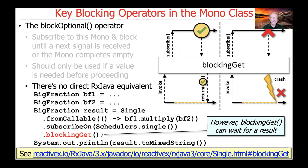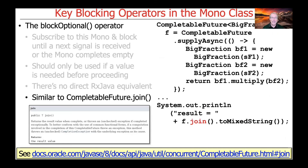You can use blockingGet in much the same way as you could use blockOptional; however, you could get nulls back, which is what blockOptional is trying to avoid. And again, this is very similar to CompletableFuture join. CompletableFuture join, for various reasons, does not have a timeout mechanism, whereas both blockOptional and block do.